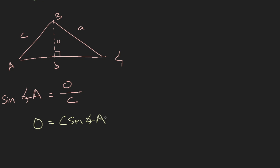Now, but you can find O using the other triangle. It's similar. So sine of angle C would be equals to opposite this over the longest side, which is a. So if we were to make O the subject of the formula, O would be equals to a sine angle C.